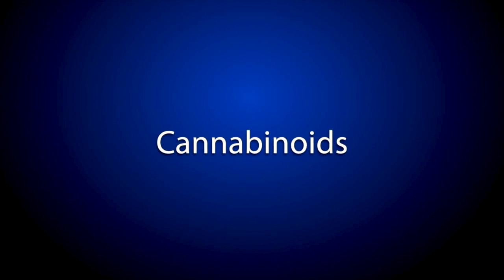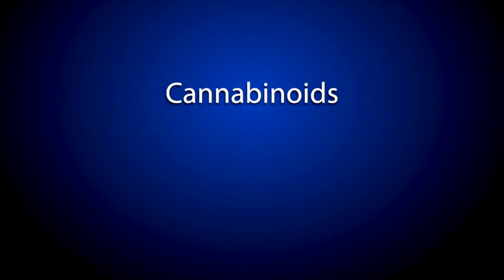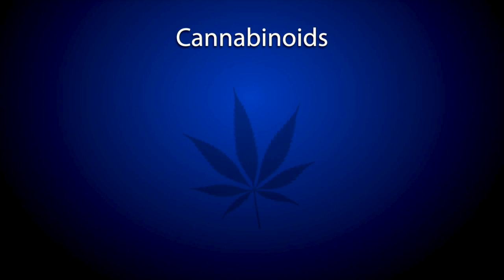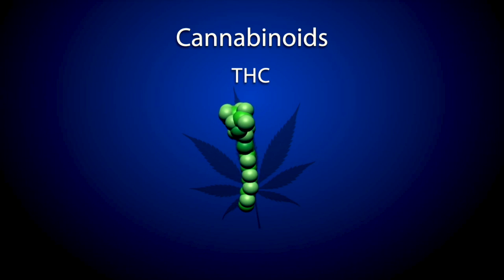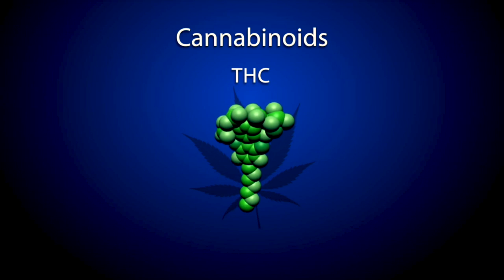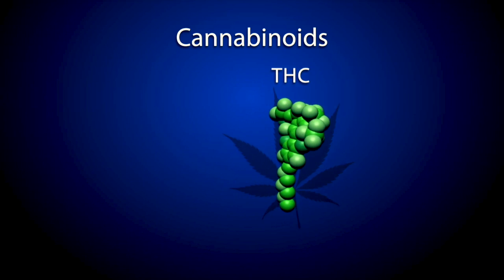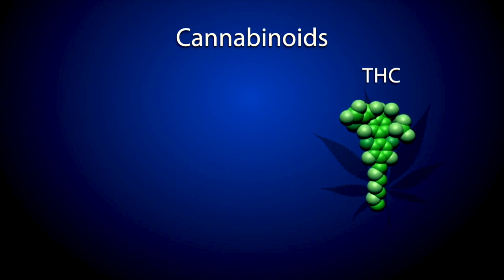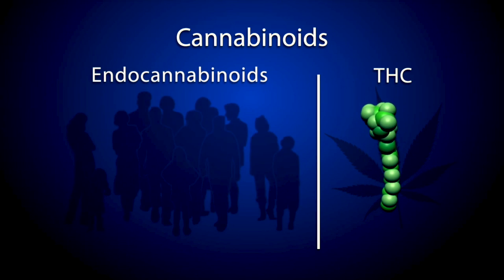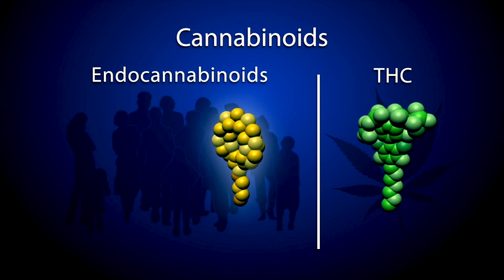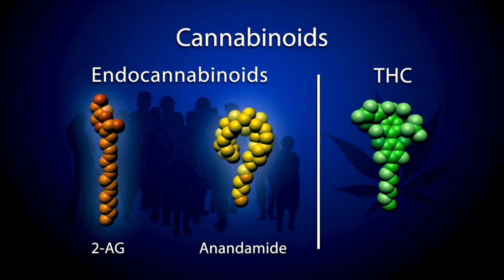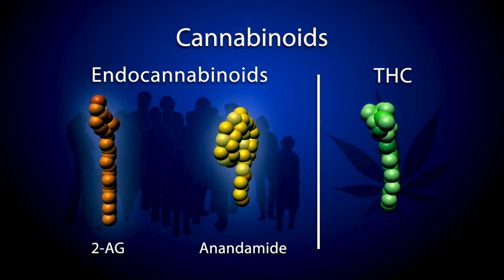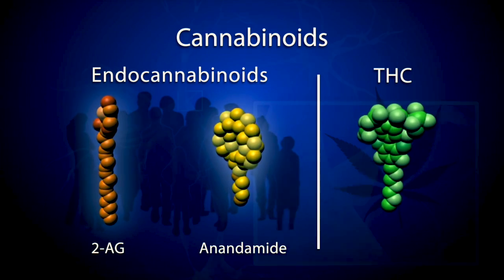Endocannabinoids are molecules that closely resemble the main chemical in the cannabis plant, delta-9 tetrahydrocannabinol or THC. Because THC is so similar to the brain's own endocannabinoids such as anandamide or 2-AG, smoking marijuana directly affects the brain of the user.